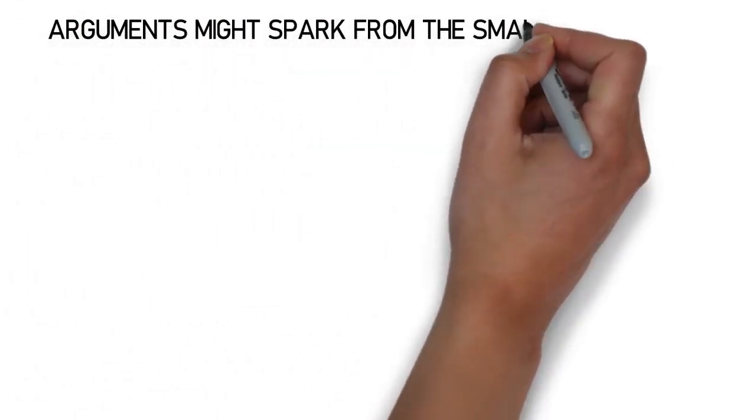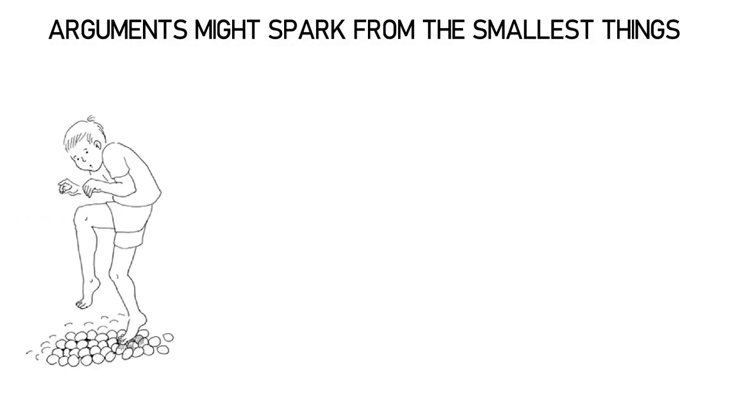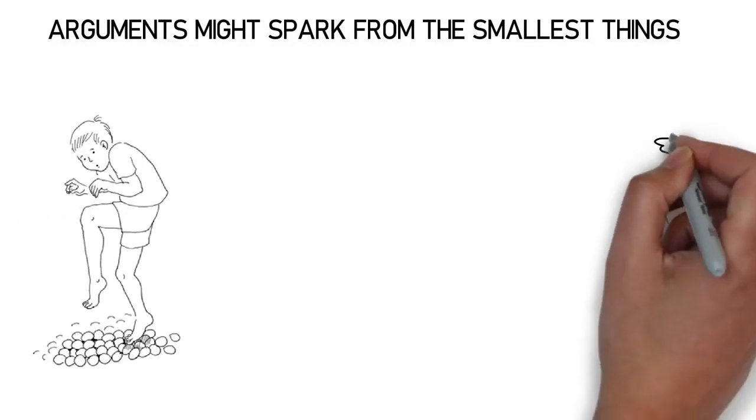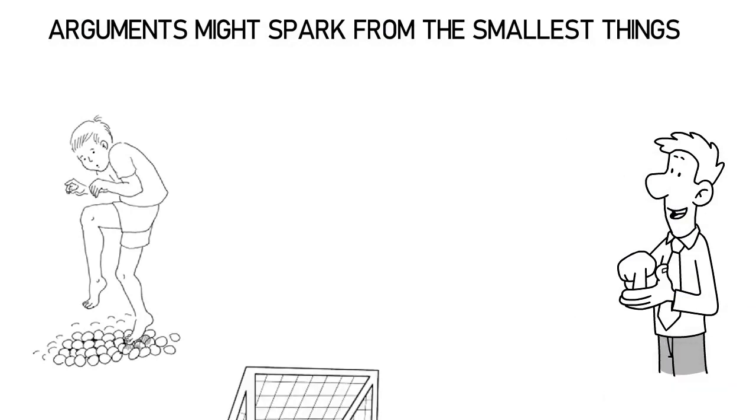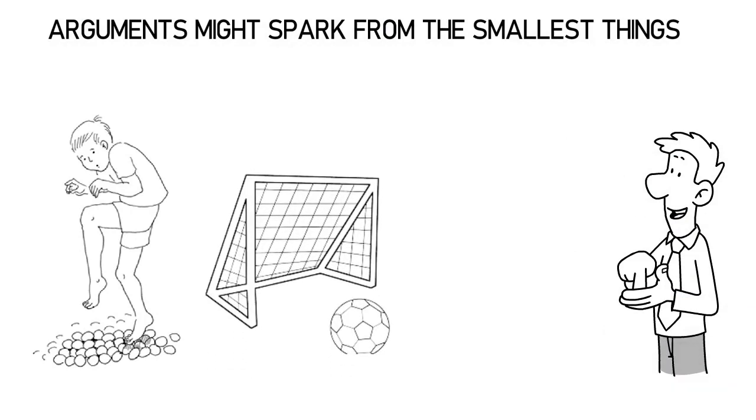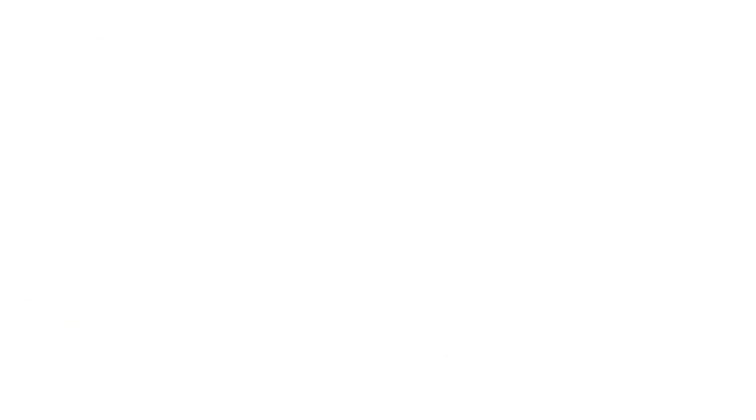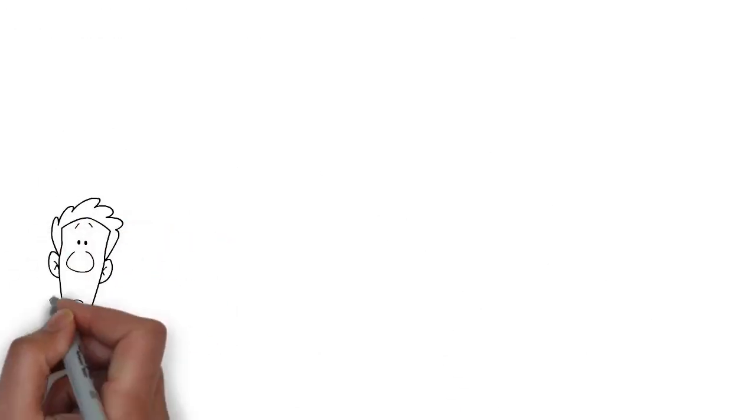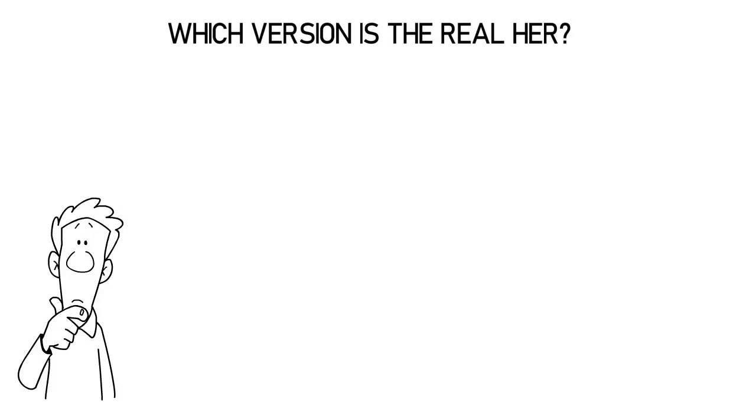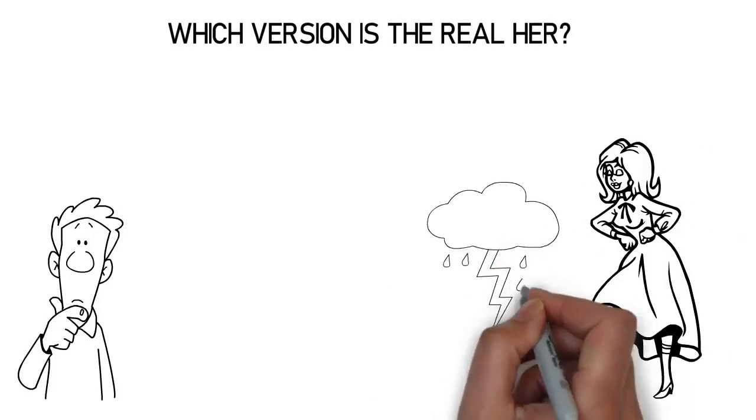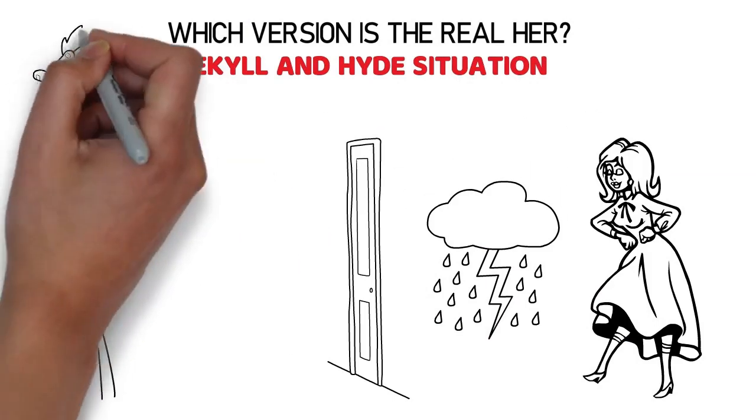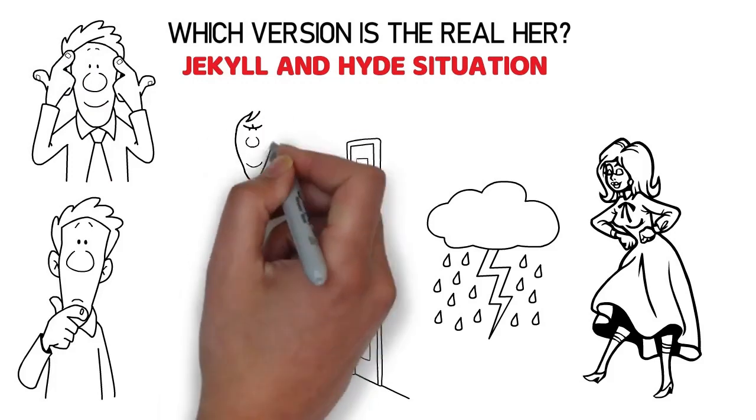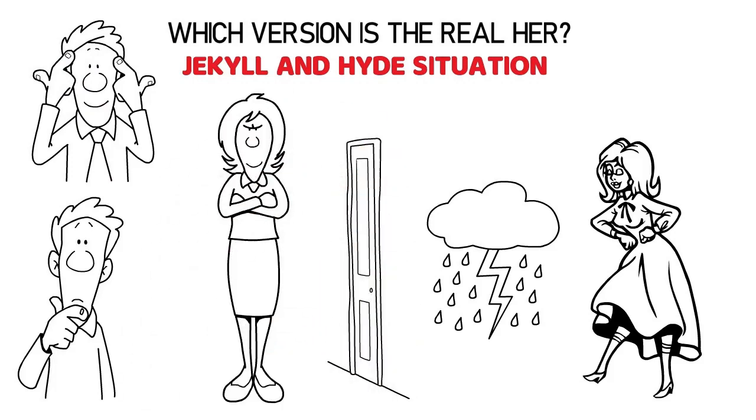Arguments might spark from the smallest things, and it often feels like walking on eggshells. You're trying to figure out the right thing to say, the right way to act. But it feels like the goalposts are always moving. It's exhausting, and frankly, it can be pretty lonely. This shift is confusing. It makes you wonder, which version is the real her? Is it the life of the party, or the storm behind closed doors? It's this Jekyll and Hyde situation that can really throw you for a loop. But understanding this switch is key to getting the full picture.